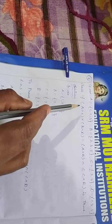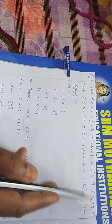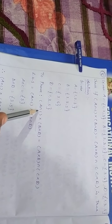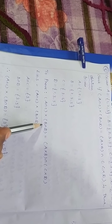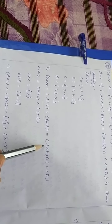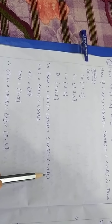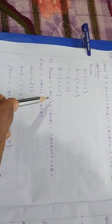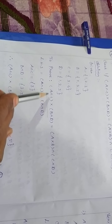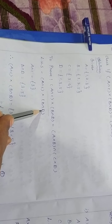Now we have to write the given sets A, B, C and D. To prove: (A ∩ C) × (B ∩ D) = (A × B) ∩ (C × D). First, we have to consider the LHS: (A ∩ C) × (B ∩ D).